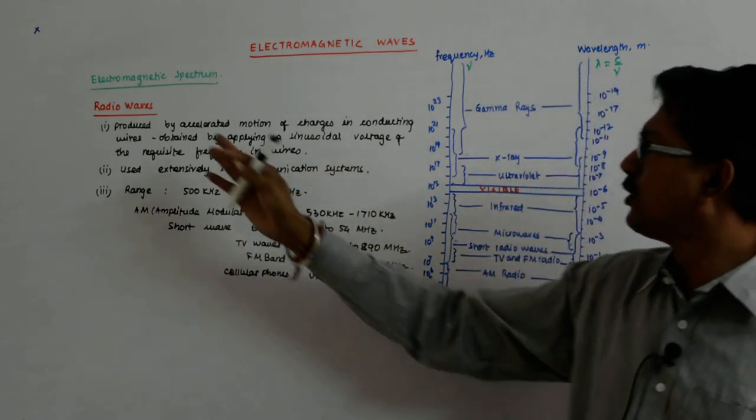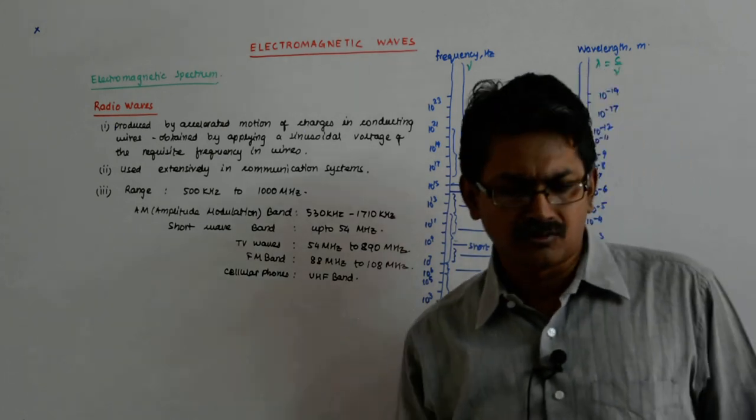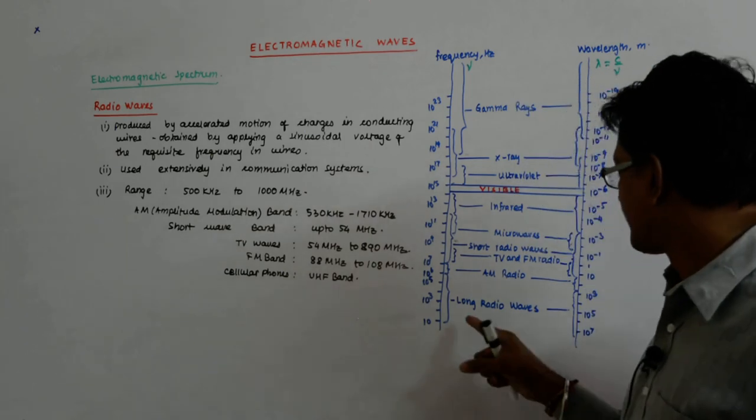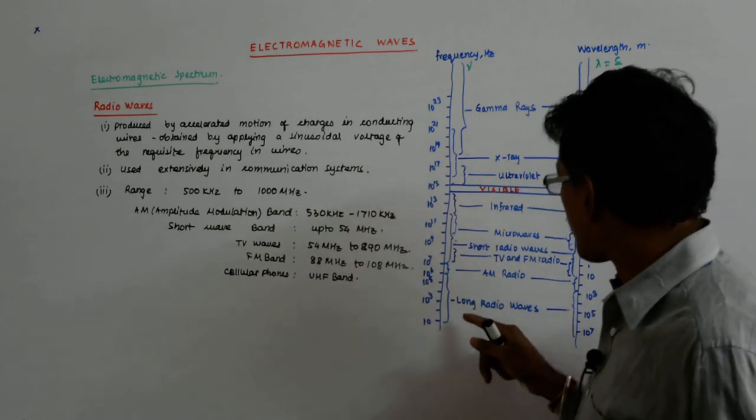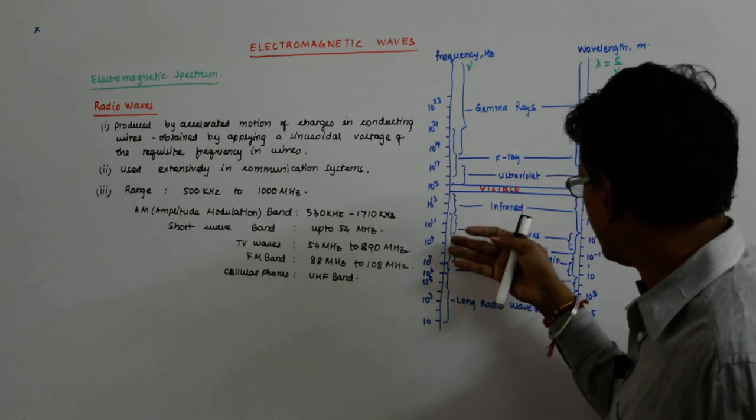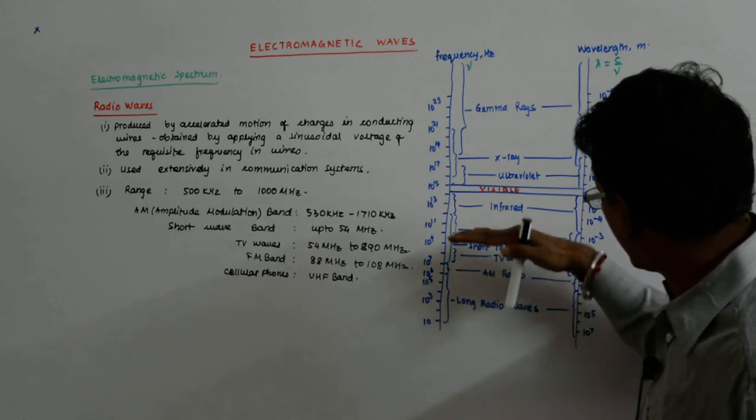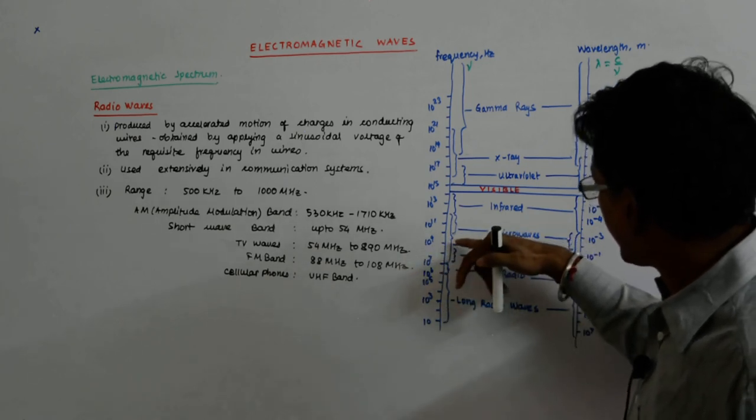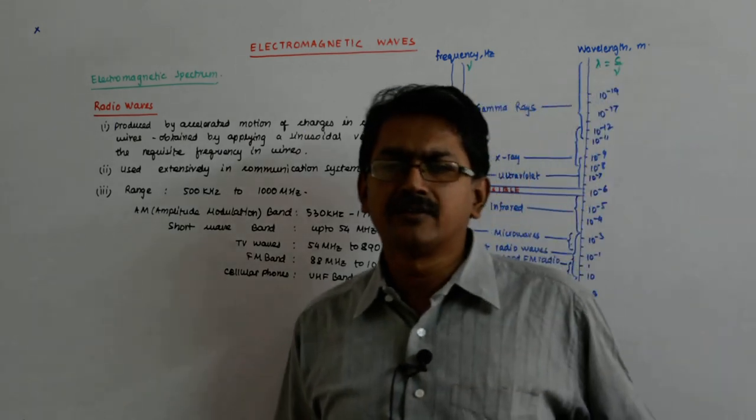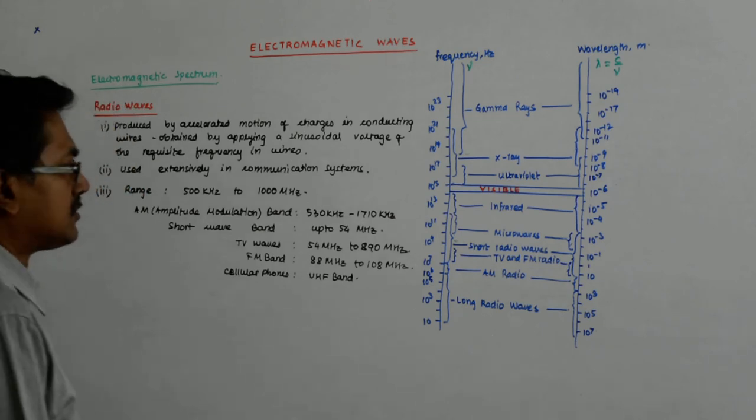First of all, it was used in the radio, the transistor, and that's why that name is the radio waves. So right from here till here, even till here, they are all radio waves - short radio waves, TV and FM radio, and this is your UHF. So till here, till below the microwaves, you are using for communication.